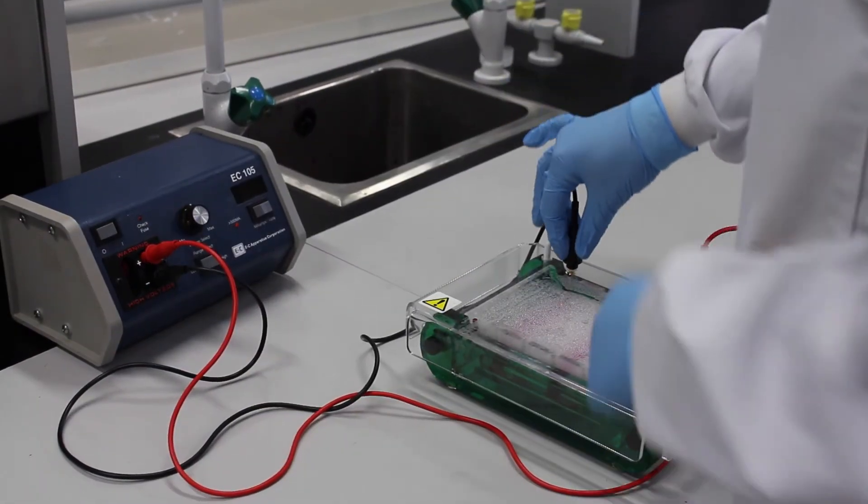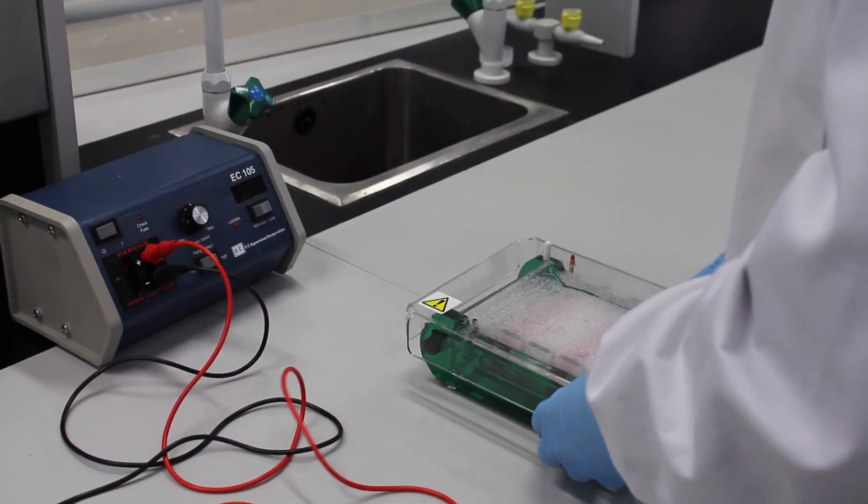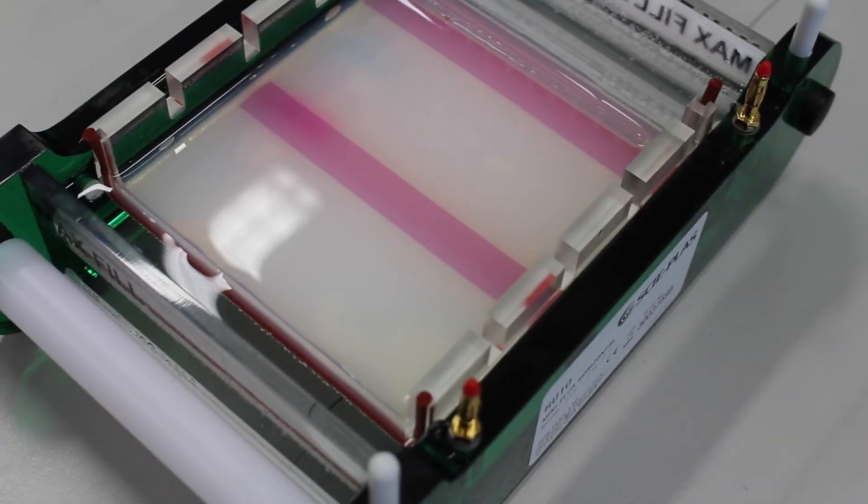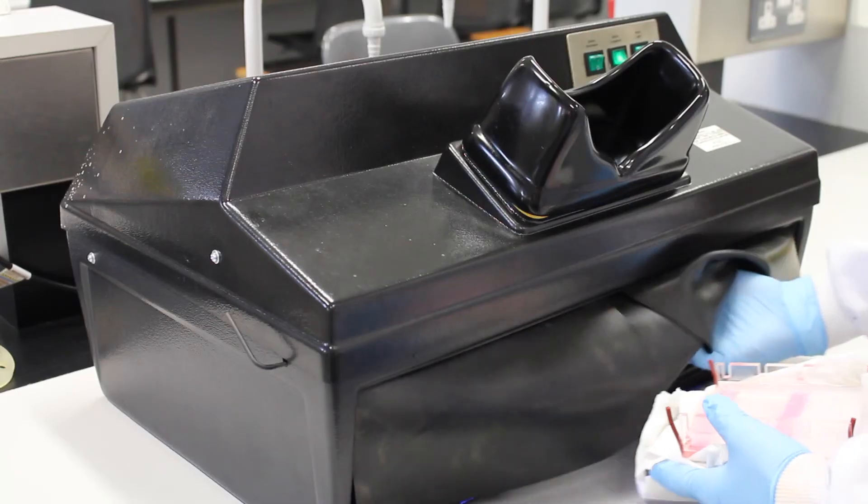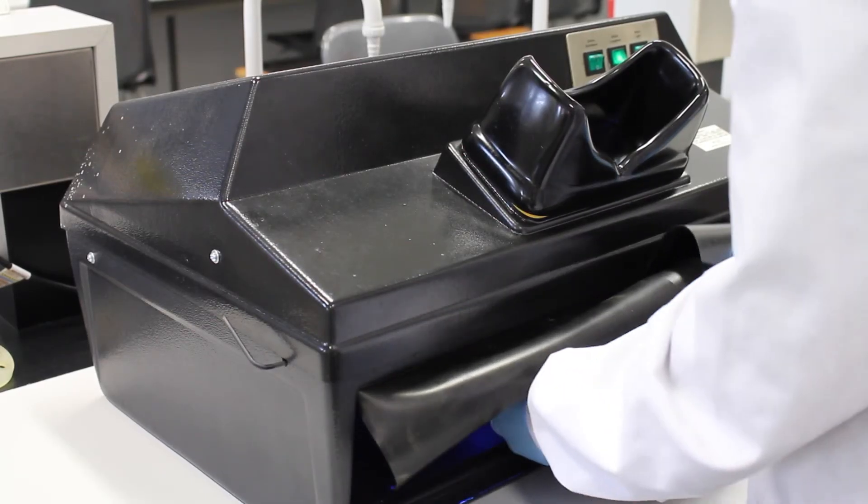When the gel has run, it's important to make sure to turn off the electricity supply before removing the electrodes. The gel is carefully removed while it is still in its mold and transferred to a source of UV light. A picture of the gel is taken.